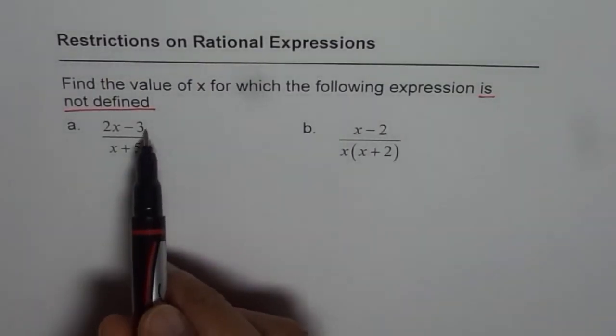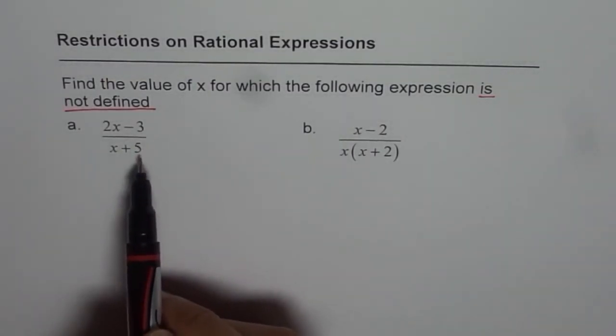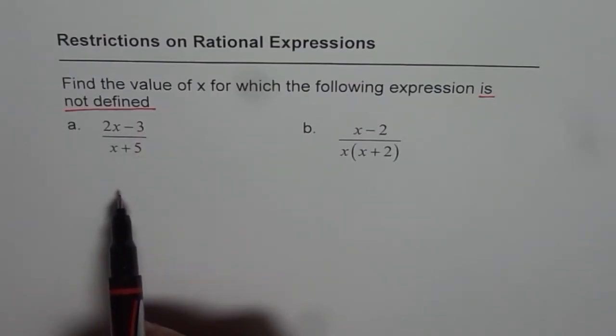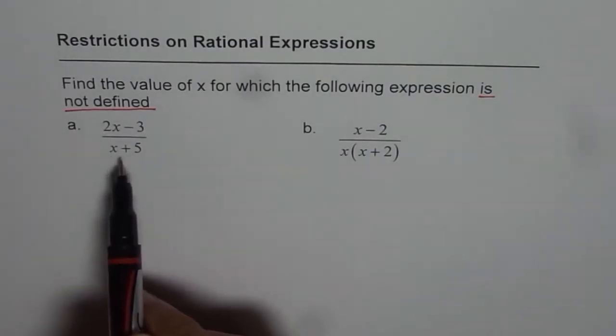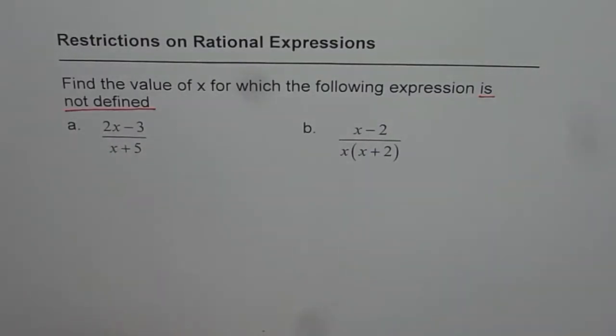As you know, a rational expression is a polynomial divided by another polynomial. Now the denominator can never be 0. If the denominator is 0 then you are dividing by 0 which is not possible. So that leads to restrictions.